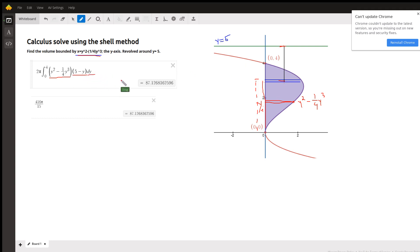dy we call the width of a typical shell or typical rectangle. So to evaluate this, we would have to integrate from 0 to 4. We'd have to multiply these two binomials together, find an antiderivative, evaluate from 0 to 4, and then multiply that result by 2 pi.